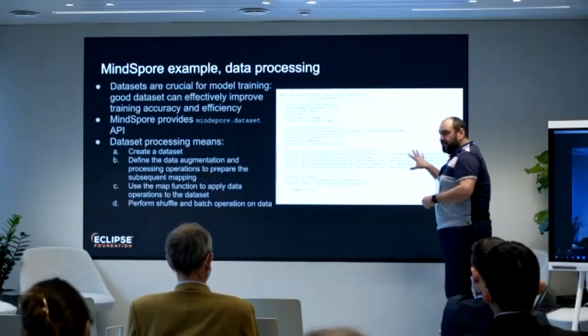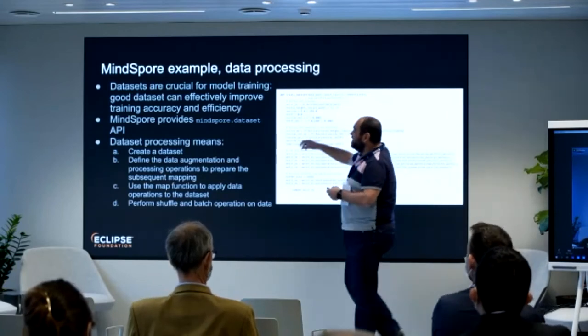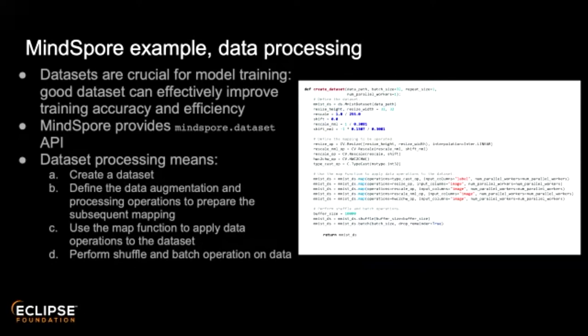Once you have your running context, the second step is to load your datasets using the MindSpore dataset API. This API lets you load datasets, apply map/reduce functions, and spread processing across different machines. Here I'm loading a dataset and specifying the number of parallel workers — since I'm on my single laptop, I only use one executor. But on multiple machines you can increase the number of parallel workers. The API also handles data augmentation, mapping, and formatting.